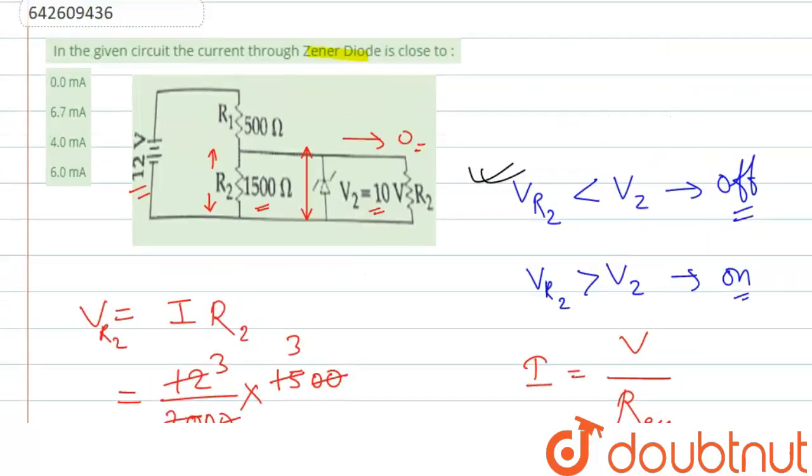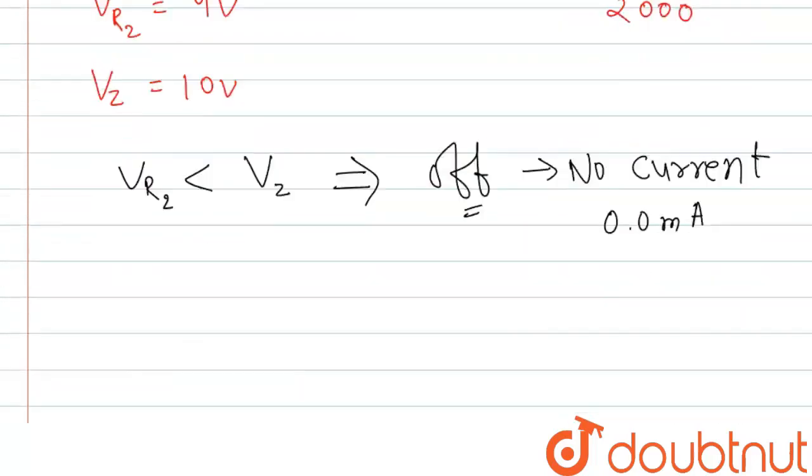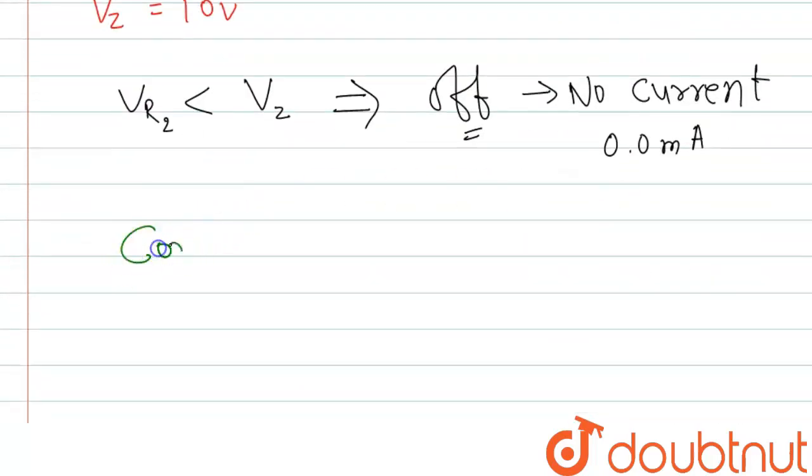So if we check the options, we have the first option. So we can write correct answer is 0.0 mA. Thank you.